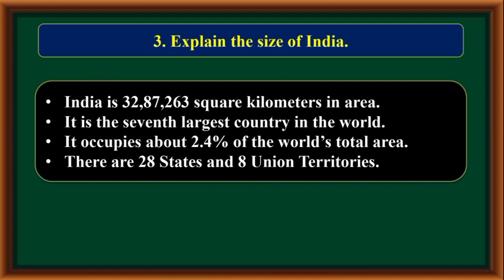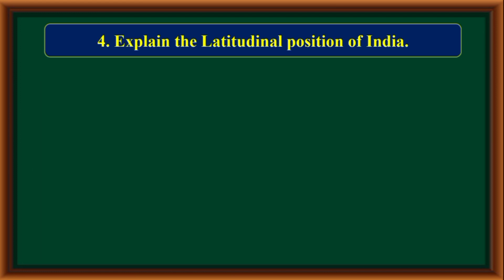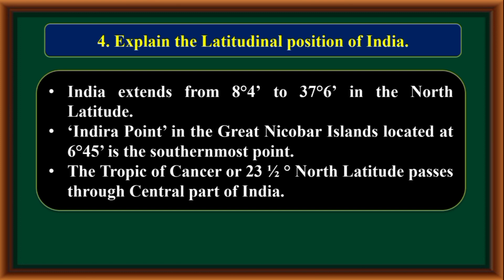Explain the size of India. India is 32,87,263 square kilometers in area. It is the seventh largest country in the world. It occupies about 2.4 percent of the world's total land area. There are 28 states and 8 Union territories.